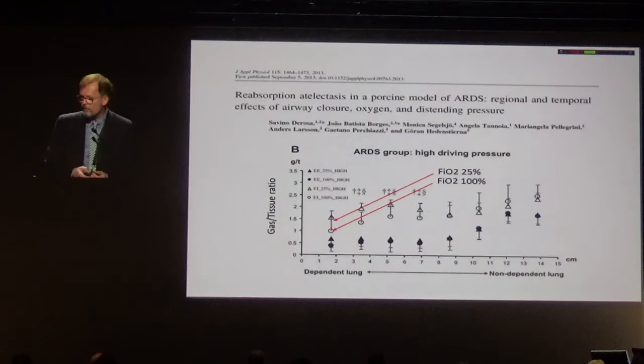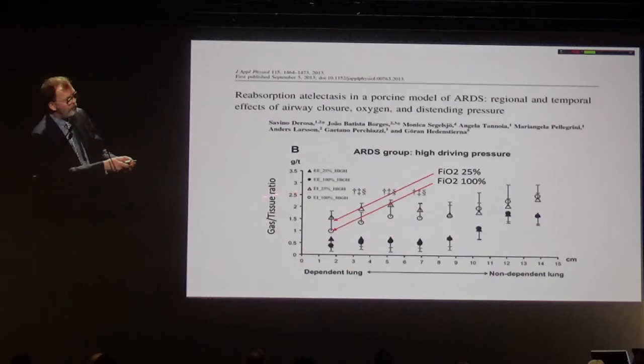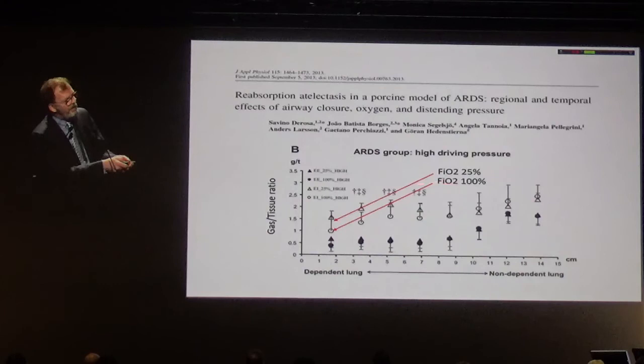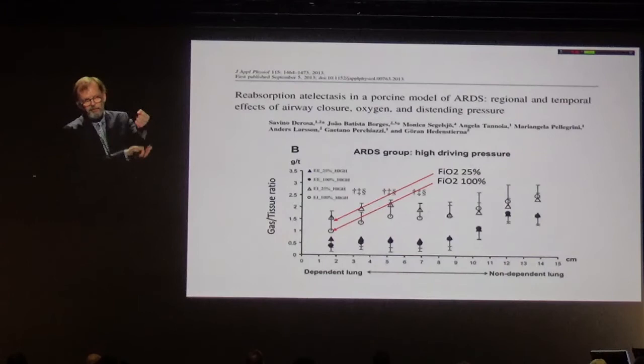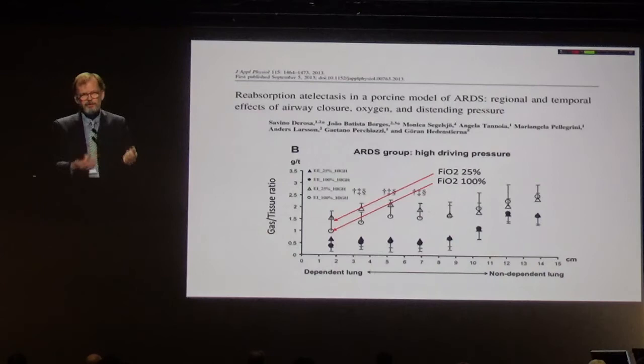It is a complicated slide, but looking at the gas-tissue ratio, they described airway closure in this animal model. The gas-tissue ratio changes depending on FiO2, and because of airway closure you have rapid reabsorption and atelectasis, which may increase shunt and increase the extent of atelectasis.